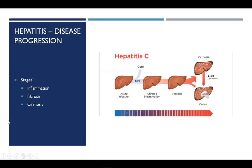Hepatitis is considered acute during the first six months of the illness. If it is not resolved by six months, it is then considered a chronic disease. Liver disease progresses through three stages: inflammation, fibrosis, and then cirrhosis. Although there are treatments available for hepatitis, a small percent of those with hepatitis B and about two-thirds of those infected with hepatitis C will develop chronic liver disease. The risk of cancer is also high among those with hepatitis C.